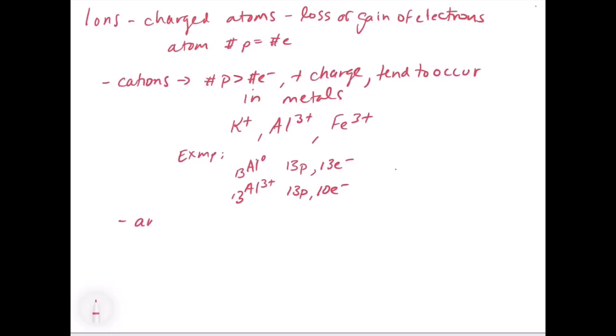Now let's look at anions. So with anions, these are negatively charged. These tend to have a greater number of electrons than they do protons. So they have a negative charge, and these tend to occur in metals. For example, Cl minus.